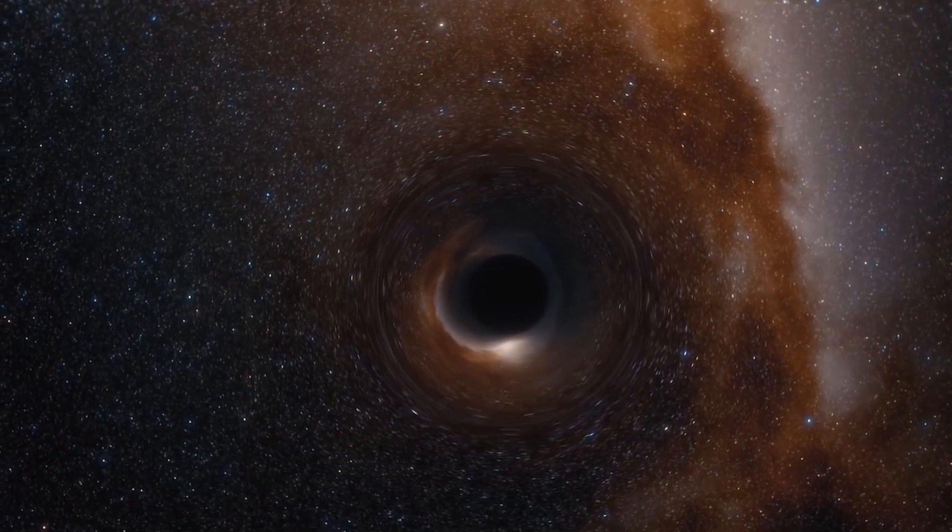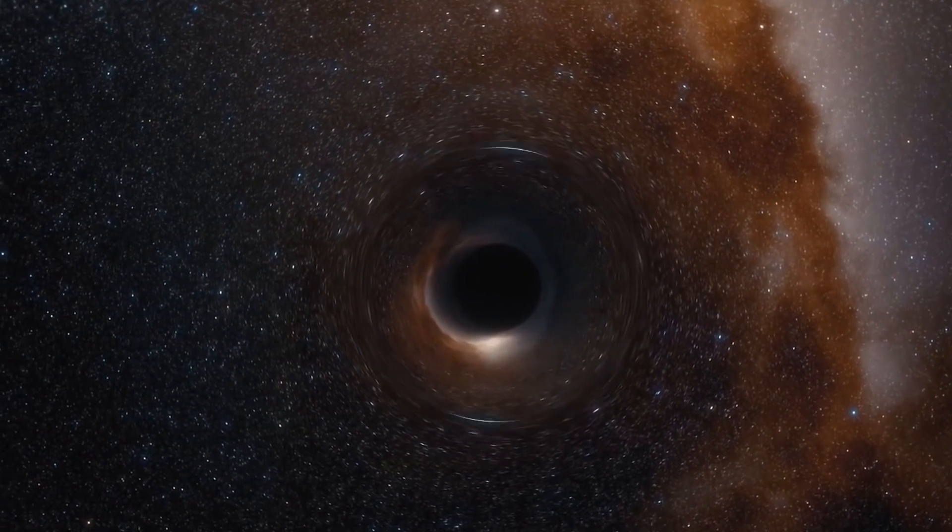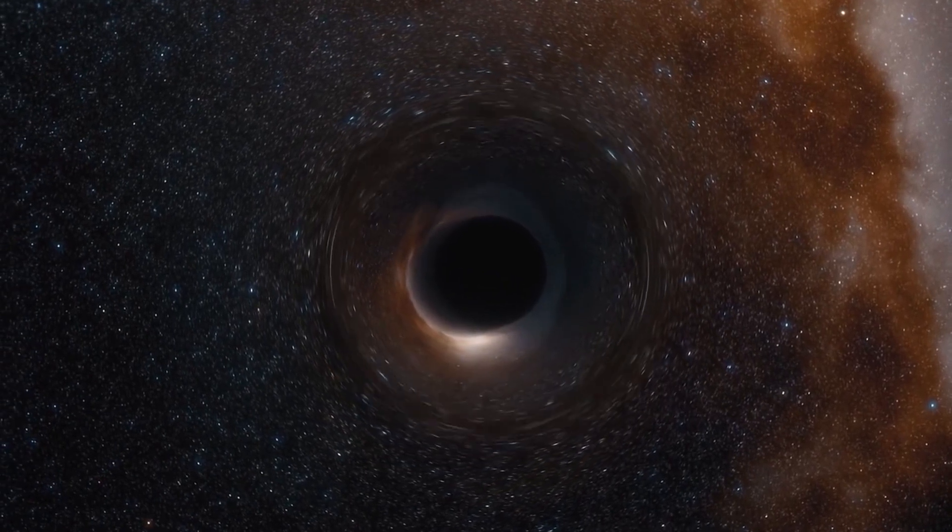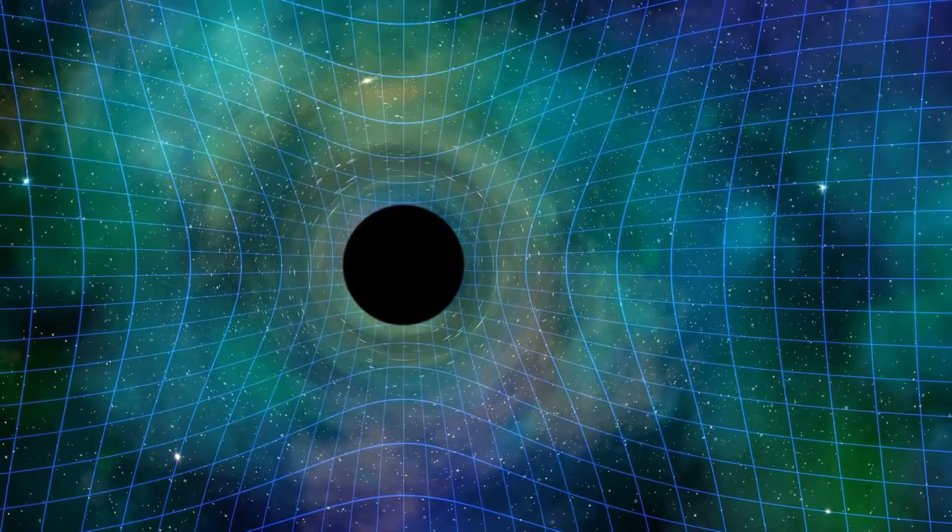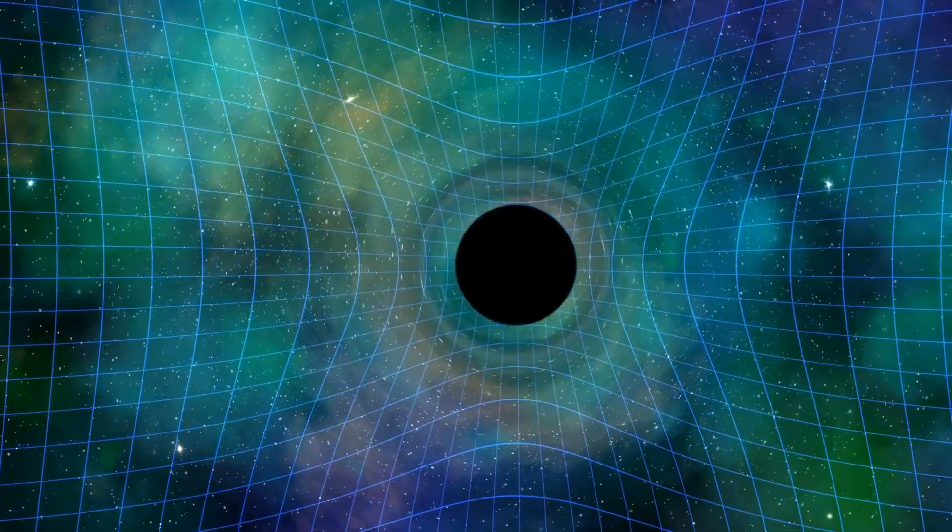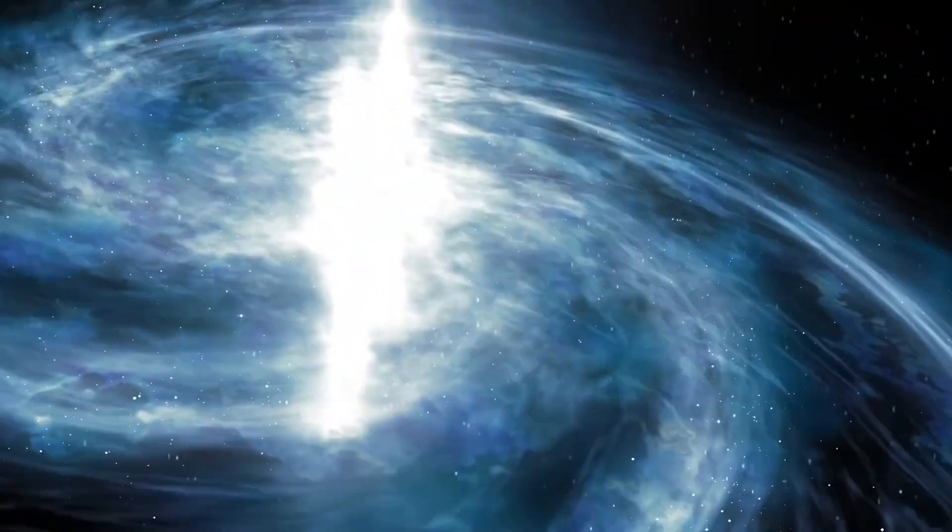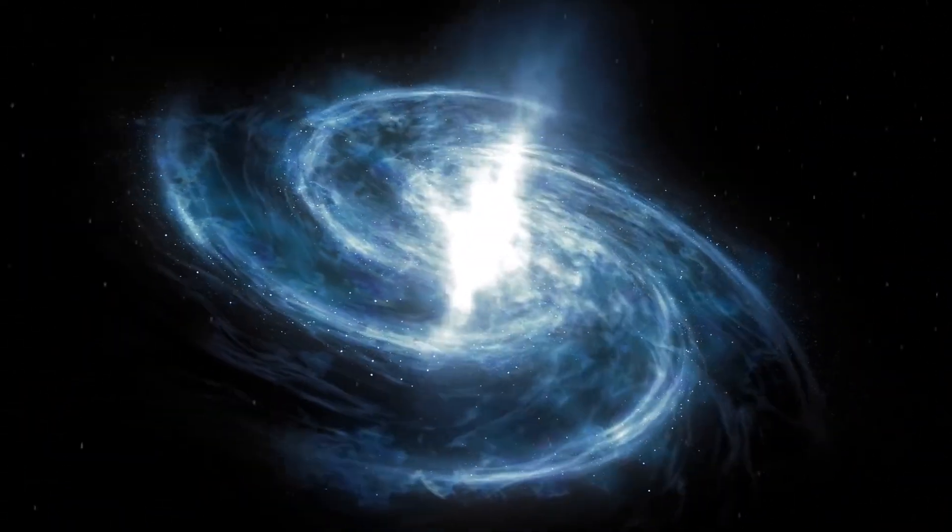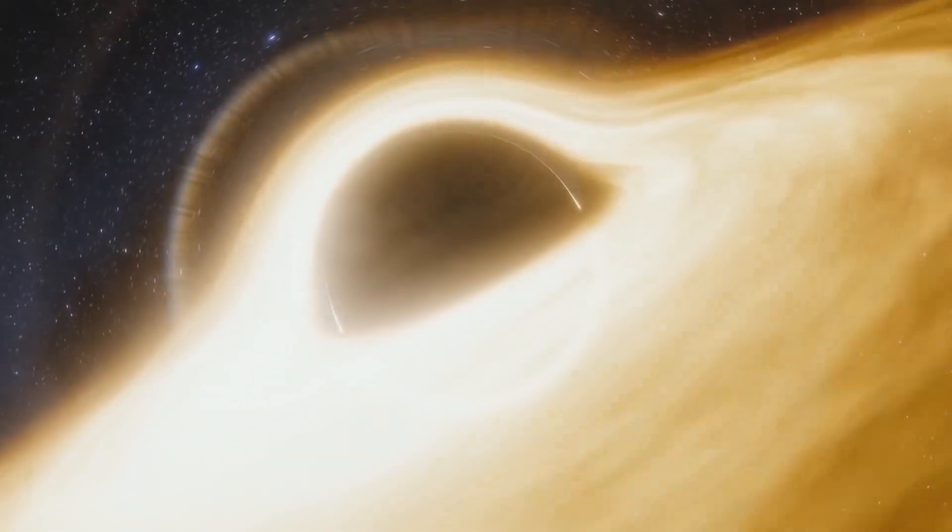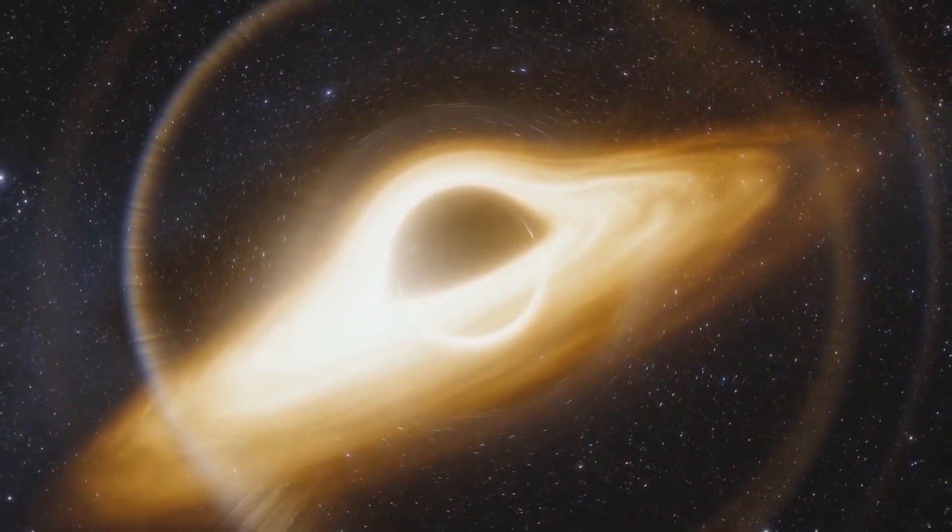They warp spacetime to such an extent that they create a point of no return called the event horizon, a boundary beyond which escape is impossible. The immense gravitational forces around black holes cause surrounding matter to spiral inexorably towards them, forming accretion disks that generate immense heat and radiation, making black holes detectable for their energetic emissions.